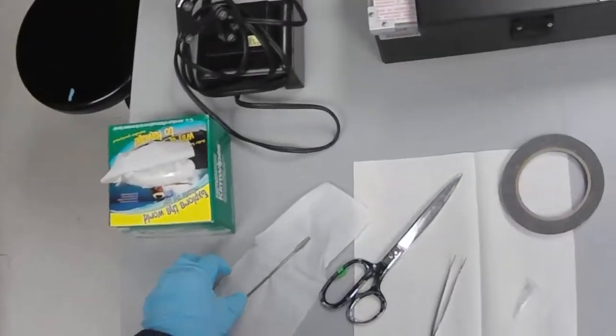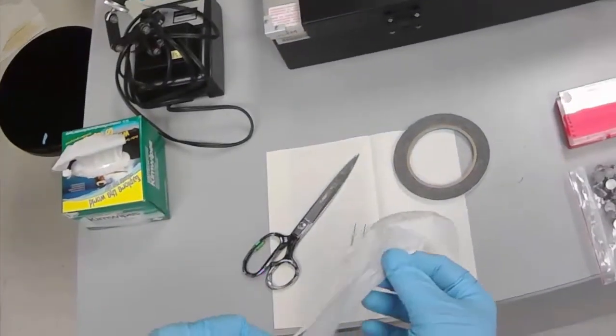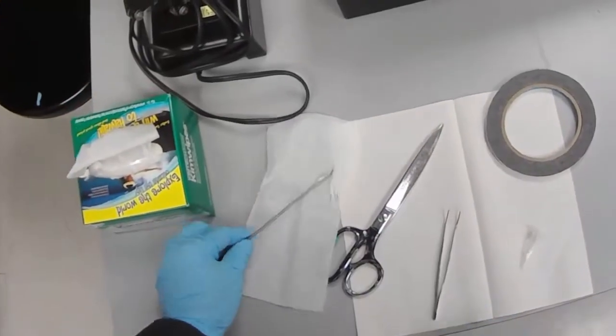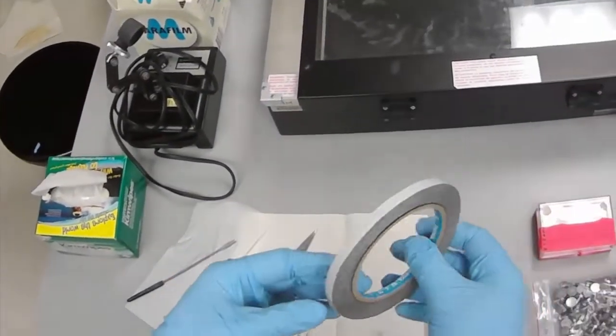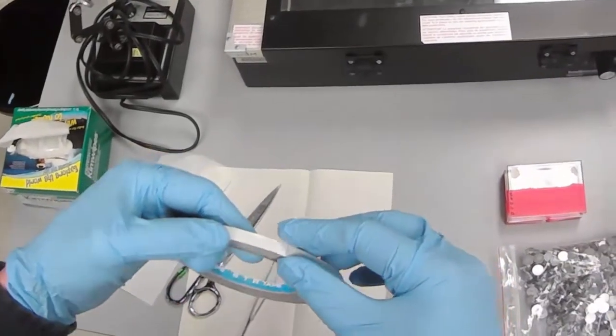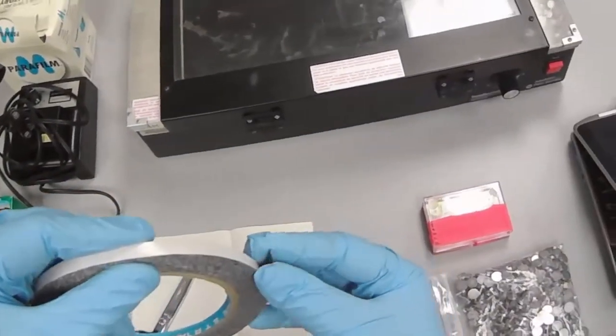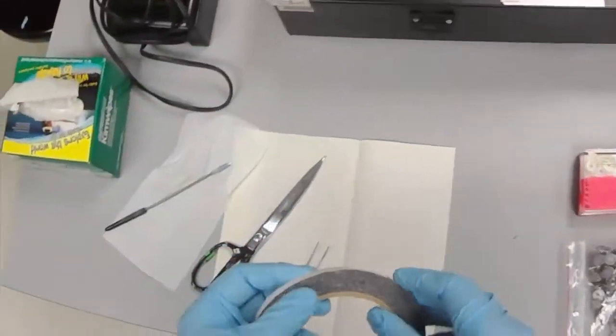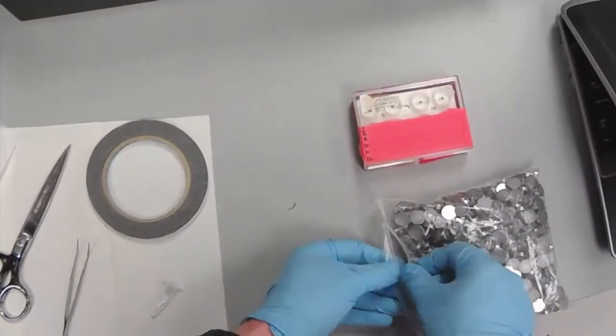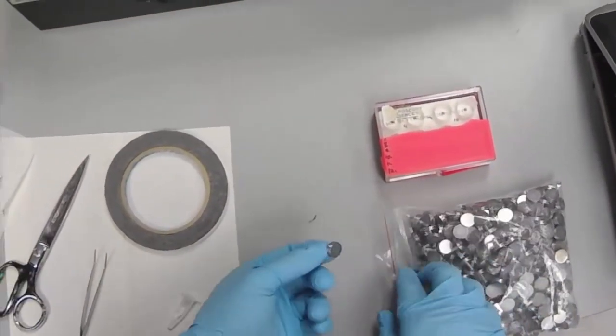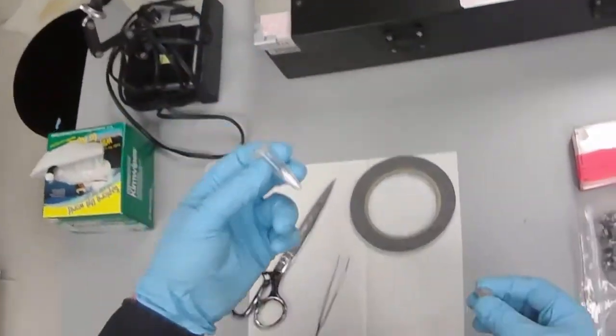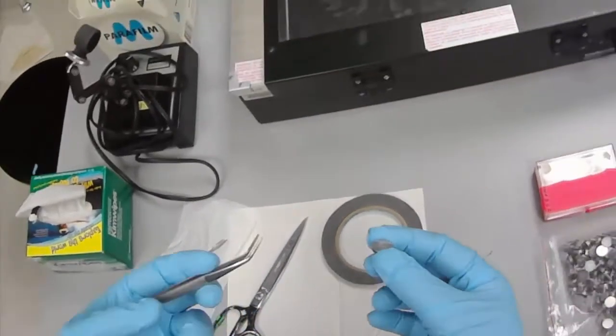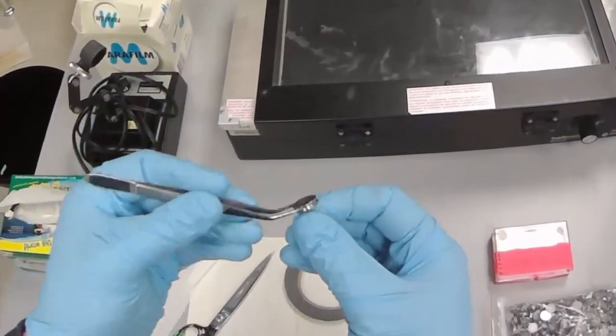To prepare our sample for the SEM, we want a clean micro spatula, a pair of scissors, carbon tape. This is double-sided tape that is embedded with carbon black so that it conducts electricity, an SEM sample holder, and of course our sample, and forceps help with manipulating the sample holder.